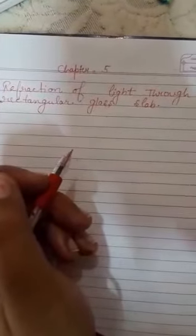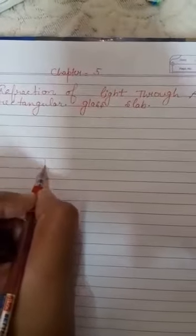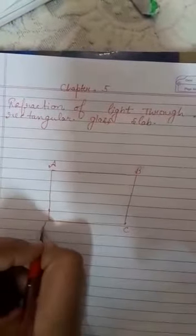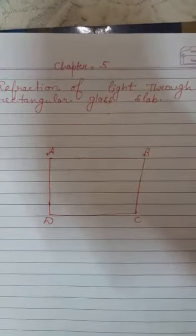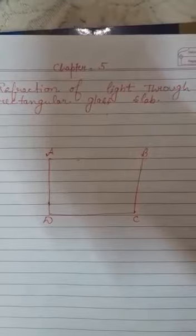Hello students, today we are going to start chapter number 5 and the topic is refraction of light through a rectangular glass slab. Firstly, consider a rectangular glass slab that is ABCD.